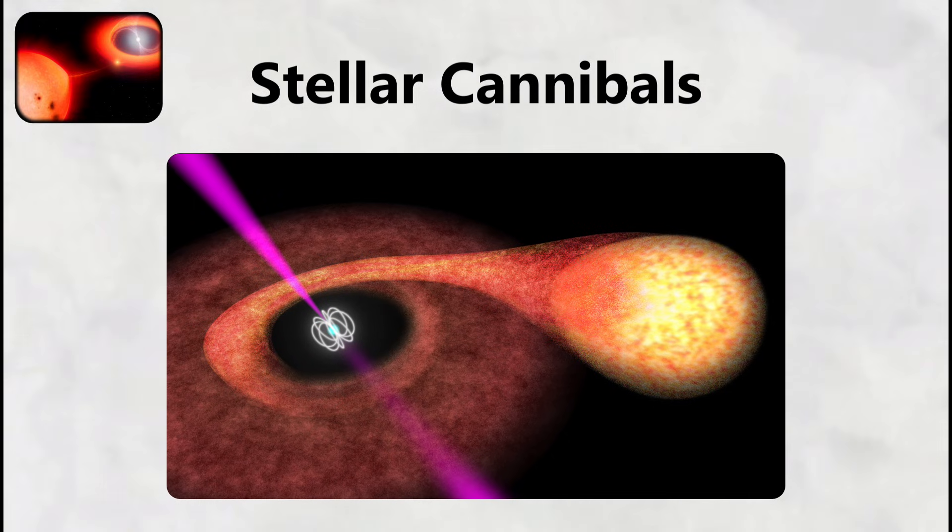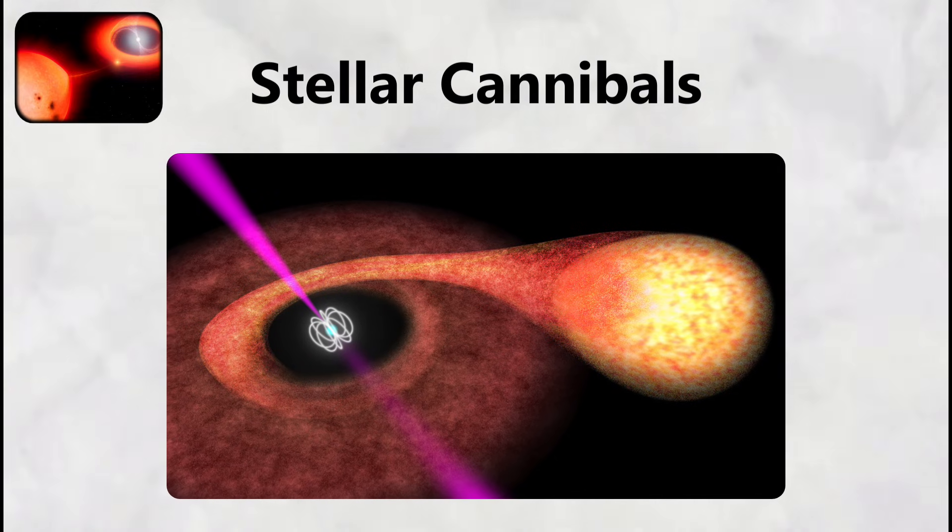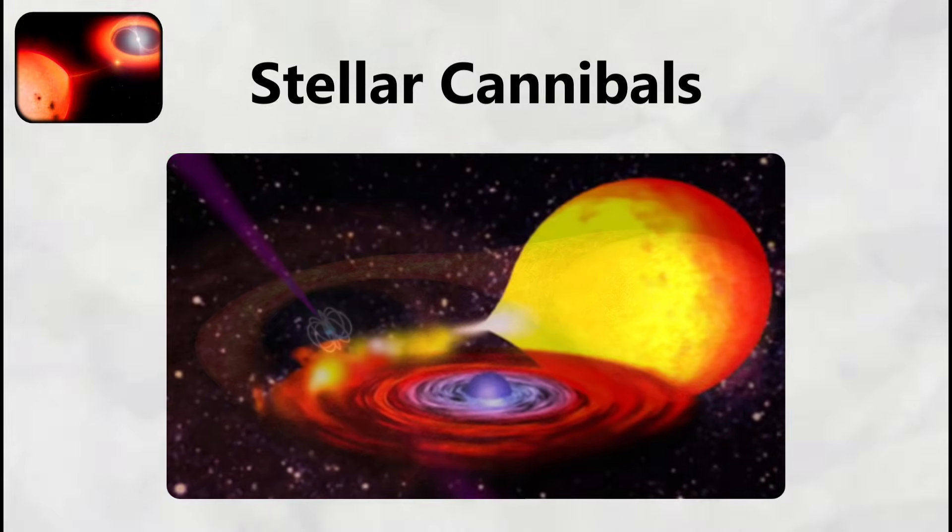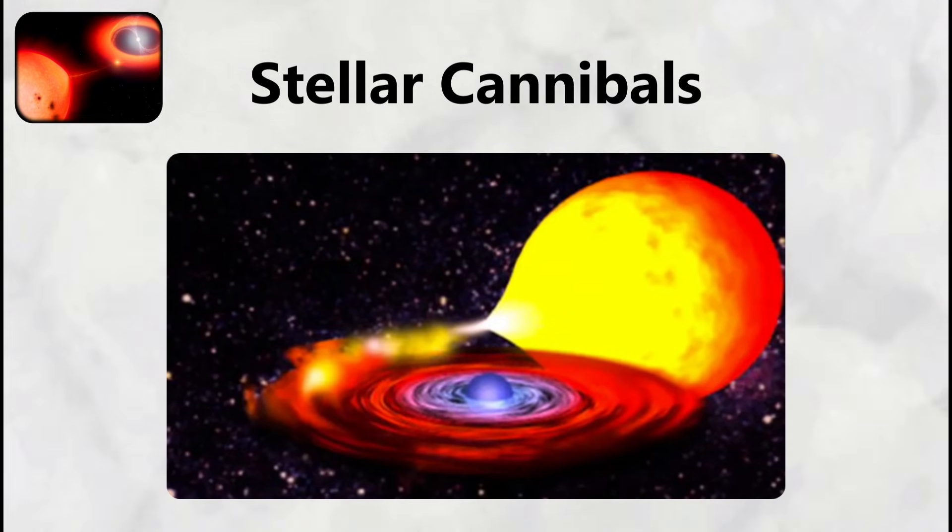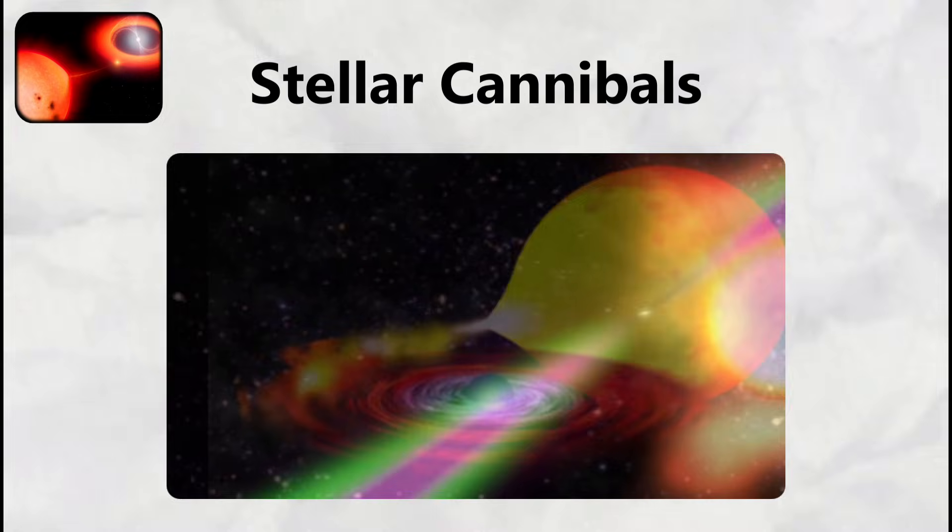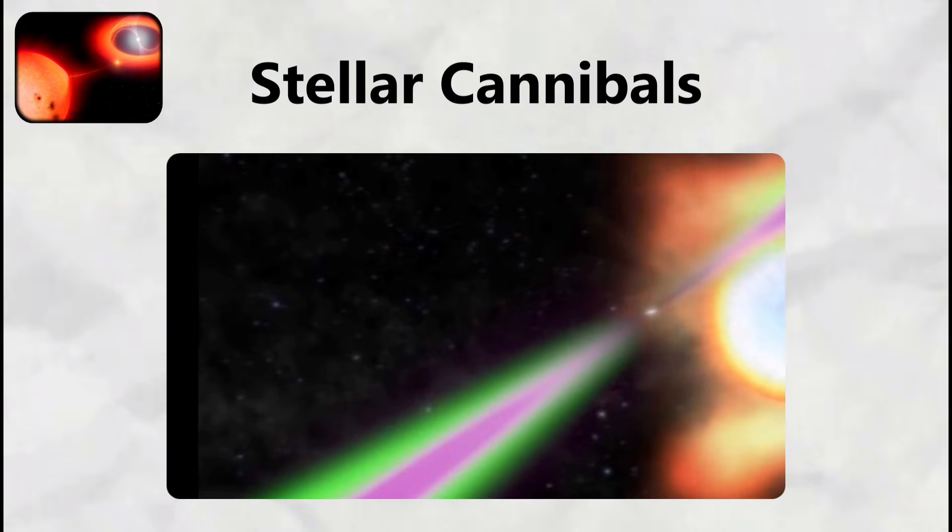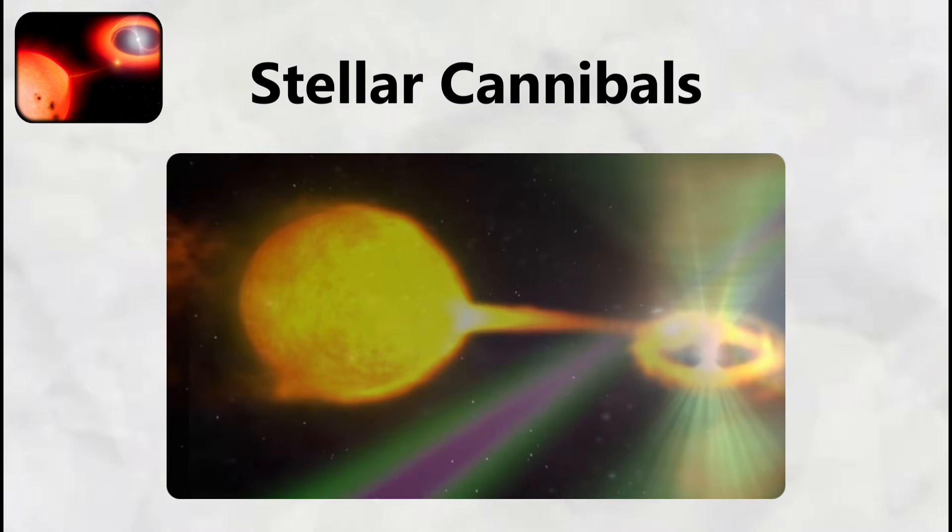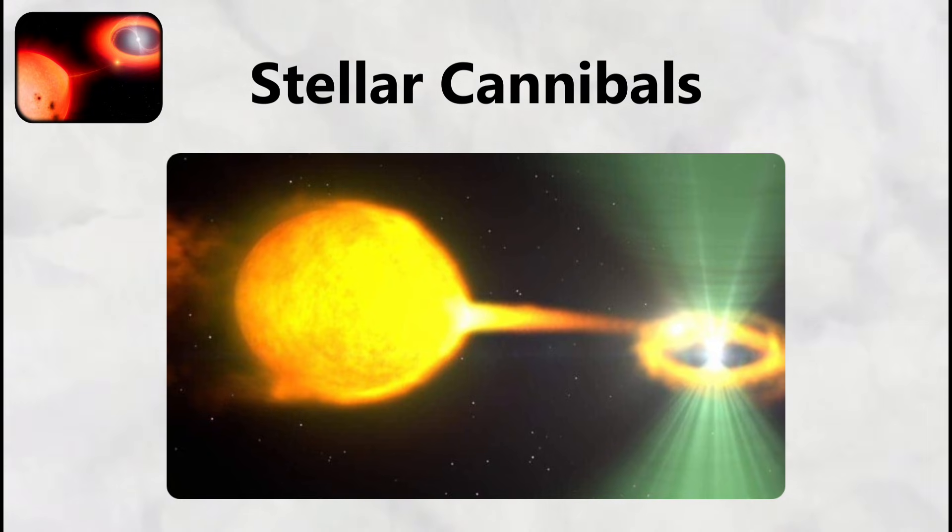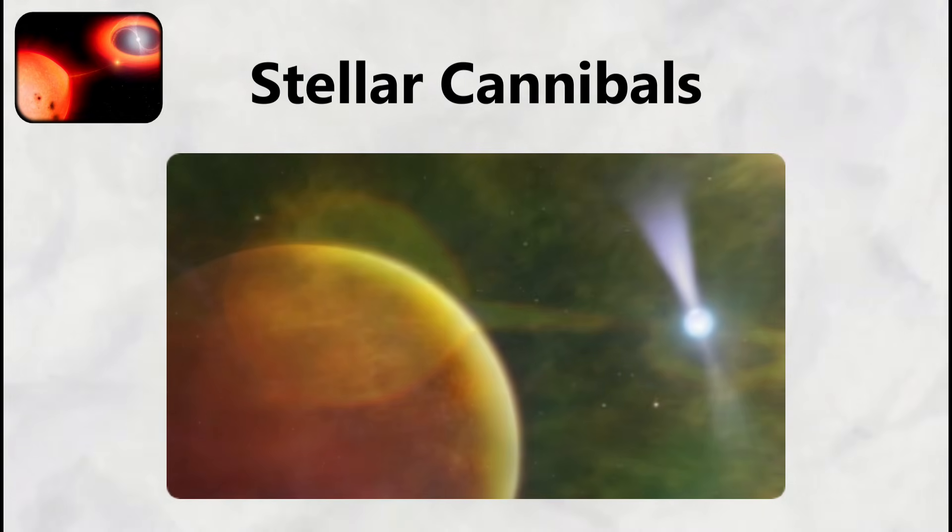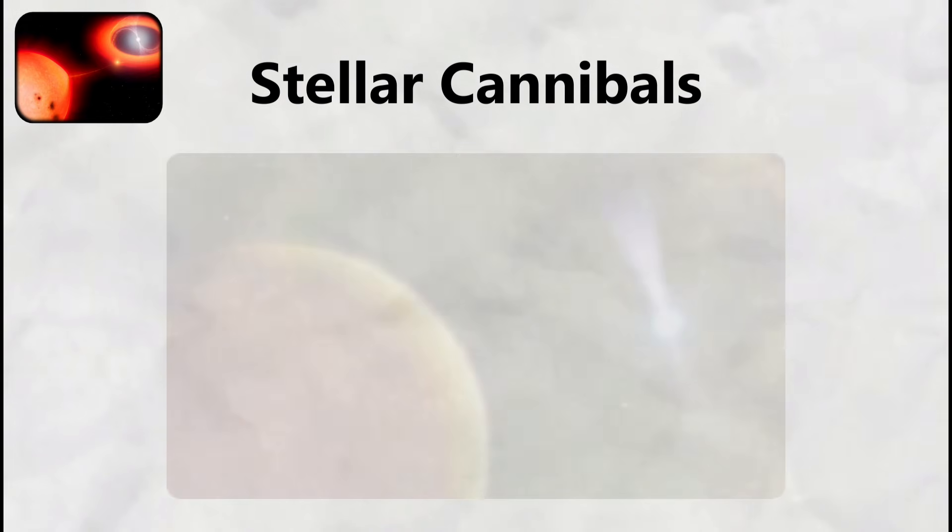The system earned its name because the pulsar behaves like a Black Widow spider, slowly killing and consuming its mate over millions of years. Scientists observe this cannibalistic process through eclipses that occur when the evaporating companion passes between Earth and the pulsar, temporarily blocking the pulsar's radio signals and revealing the extent of the destruction taking place.